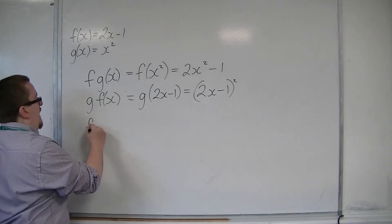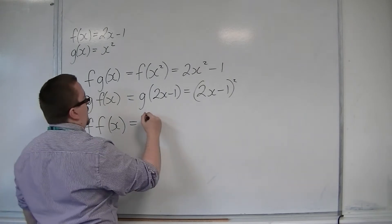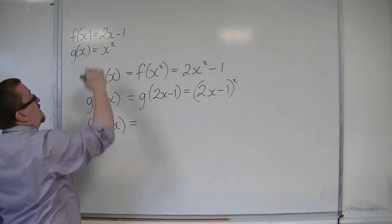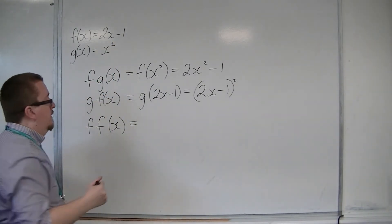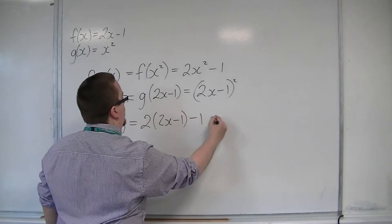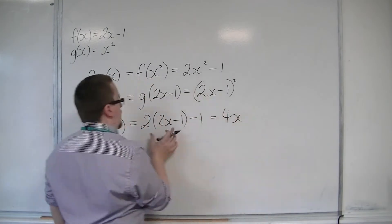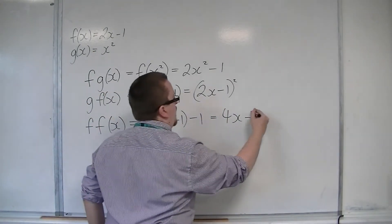If I want f f of x, or f 2x, then this is 2x minus 1 going into 2x minus 1. So this is 2 lots of 2x minus 1, taking away 1. That gets me 4x minus 2, take away 1, so minus 3.